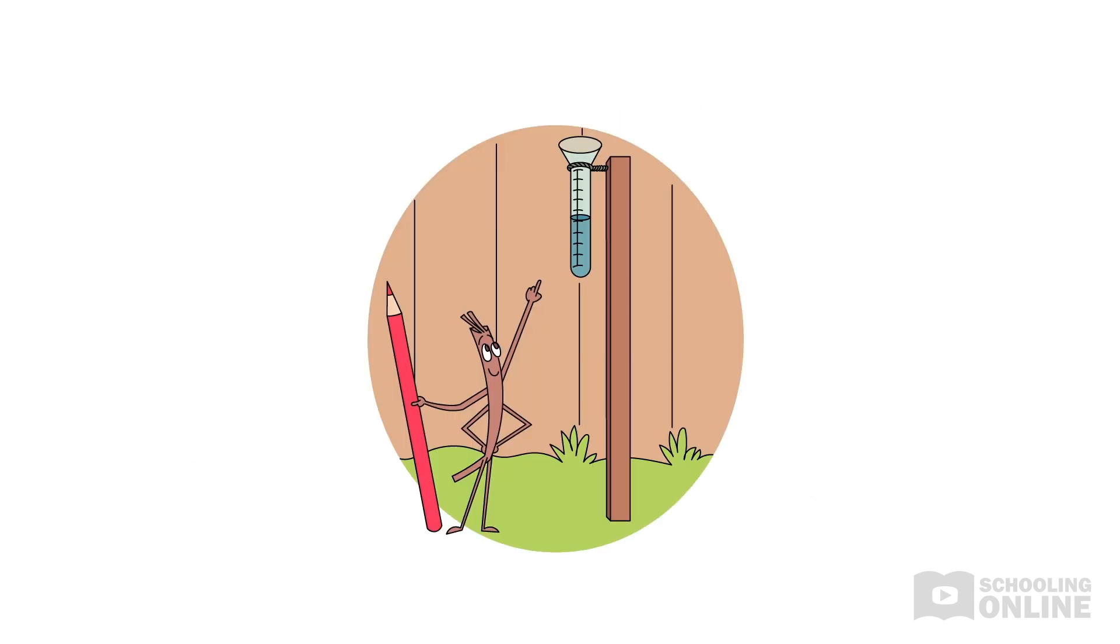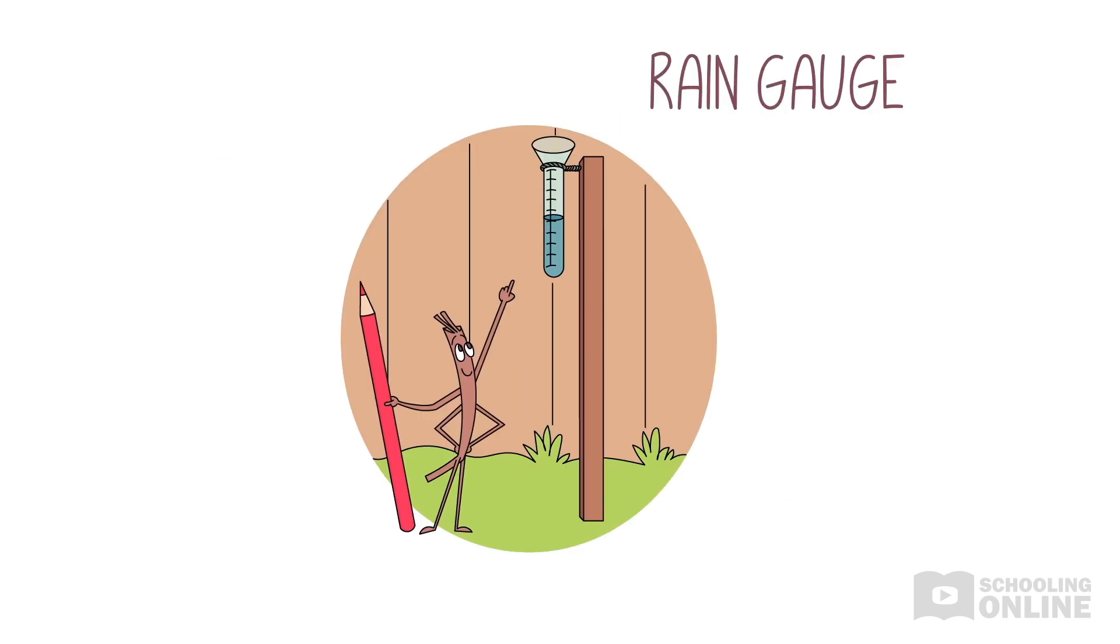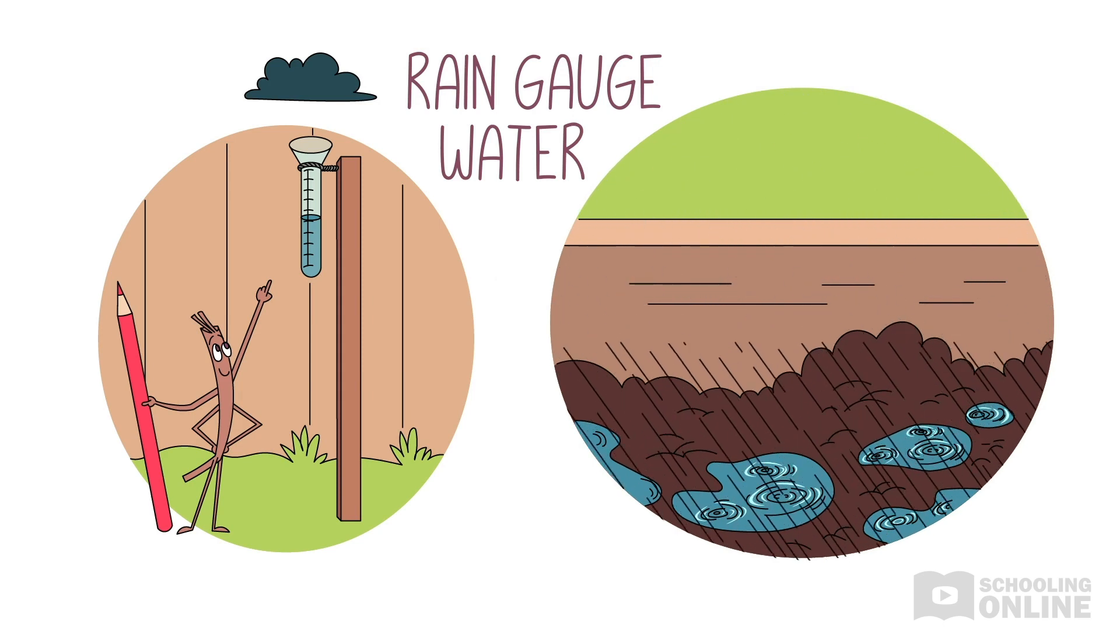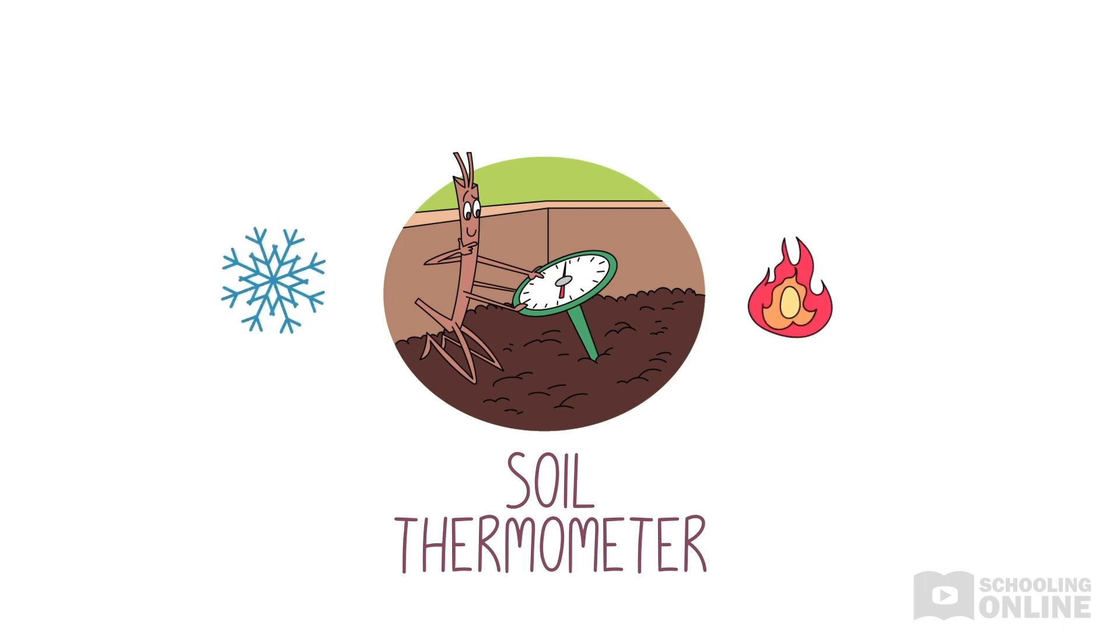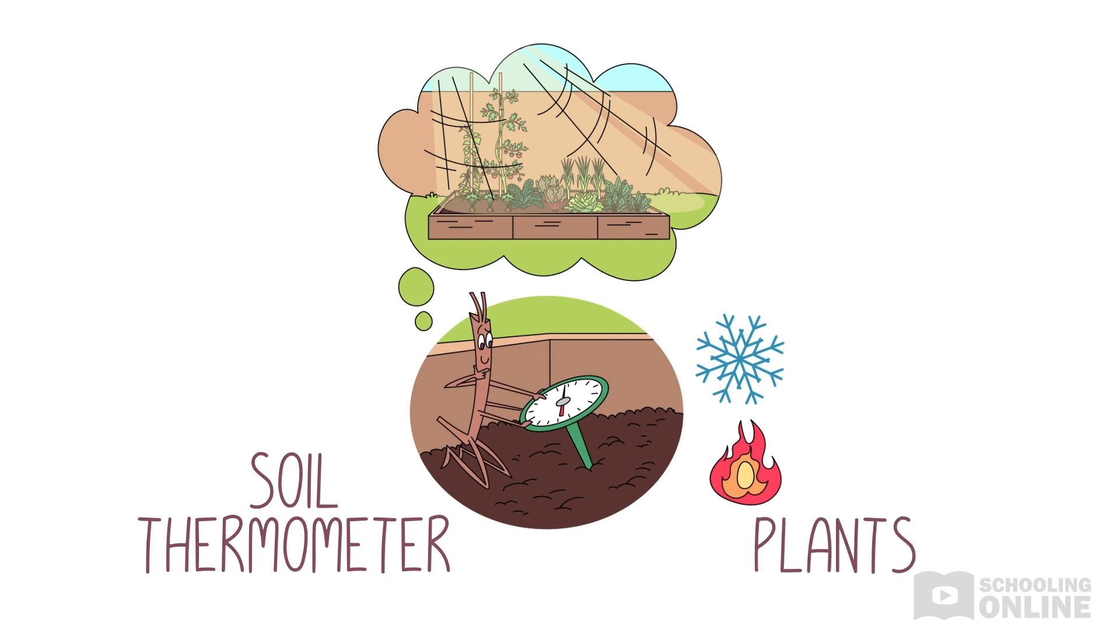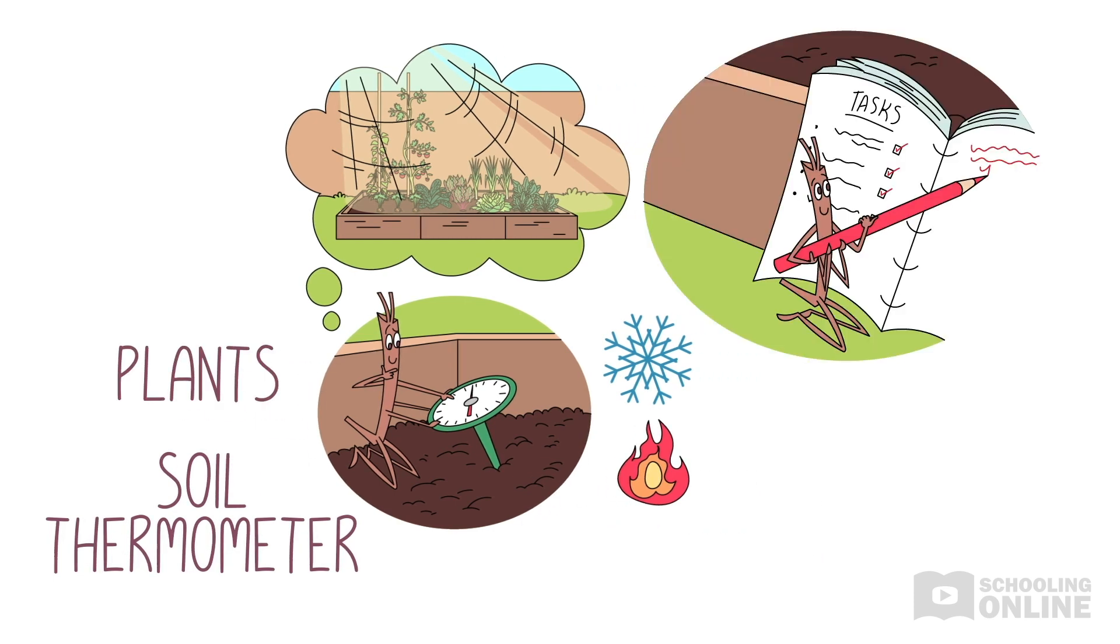He carefully checks Maya's rain gauge, then writes a number on a page. The rain gauge shows how much it rained, how much water the soil has gained. Then he grabs a special tool, a soil thermometer that's really cool. He sticks it in the soil to see how cold or warm the ground might be. Maya's plants need to be warm so they can grow and reach peak form. He writes a number on a page, like he did with the rain gauge.